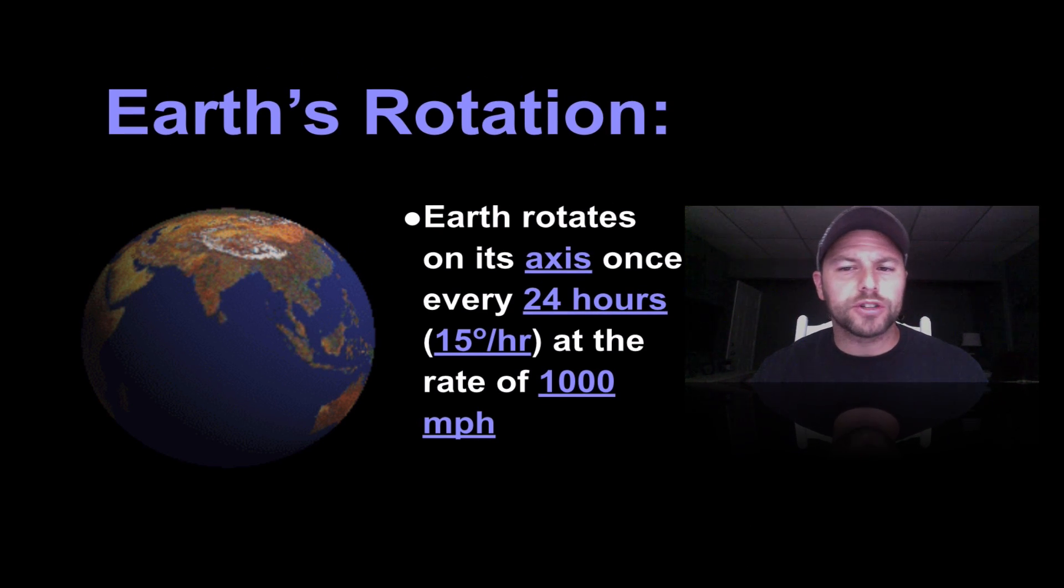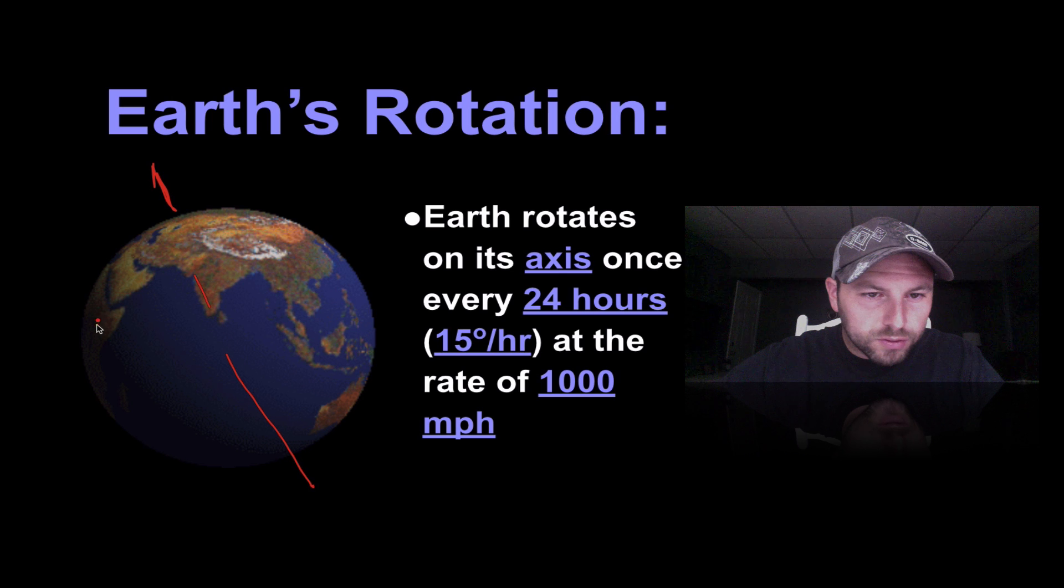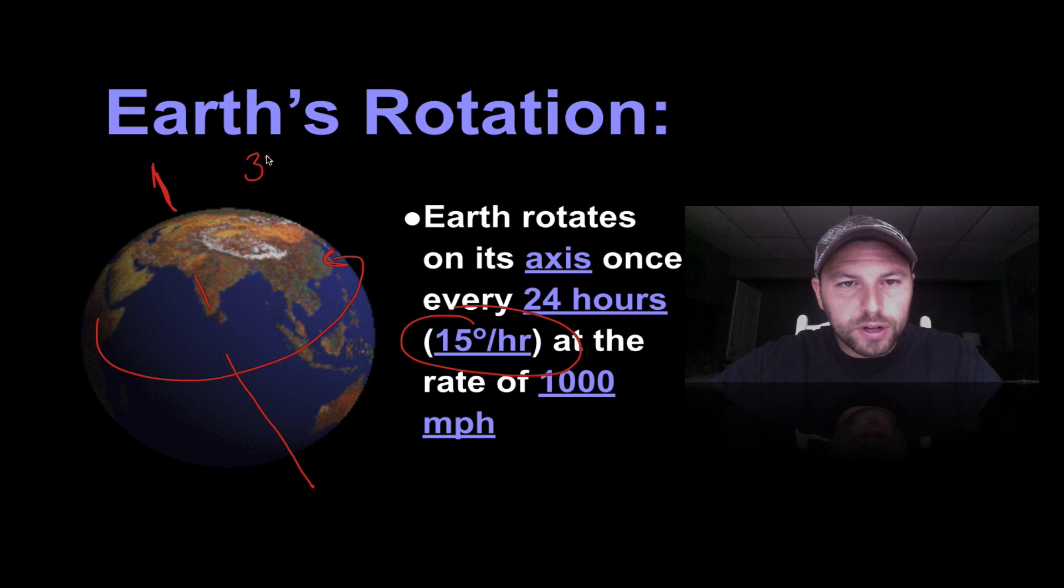The first thing we're going to take a look at is Earth's rotation. We know that Earth rotates on its axis once every 24 hours, or 15 degrees per hour, at a rate of about a thousand miles per hour. So if we have our axis, it's going to rotate or move about that axis. To get this 15 degrees per hour, it's relatively simple: we do 360 degrees because that's how many degrees are in a circle, divided by 24 hours, and we should get 15 degrees per hour. So that's the Earth's rate of rotation.